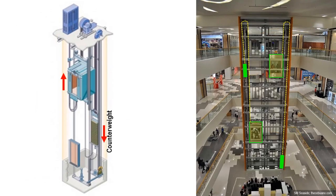An aerial tram works like an elevator. Each elevator has a counterweight equal to the weight of the elevator cabin. The cabin moves back and forth between the topmost floor and the lowest floor. What people do not see is that the elevator cabin and counterweight are connected by a cable.